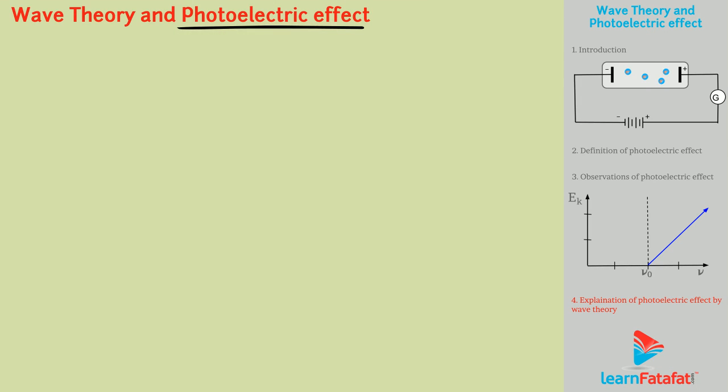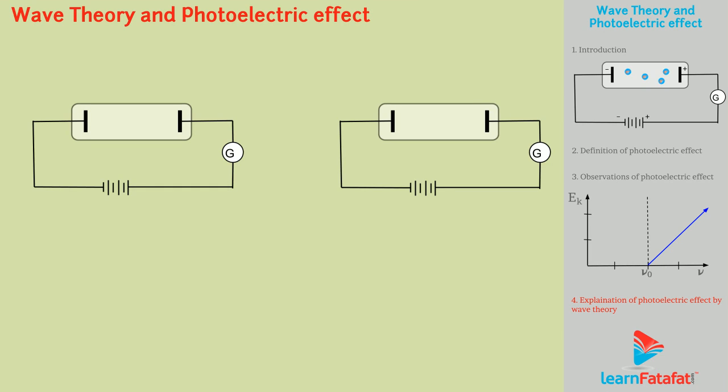Explanation of photoelectric effect by wave theory. According to wave theory, the number of ejected electrons and their kinetic energy depends on brightness of the light.